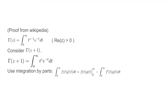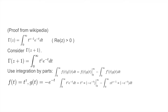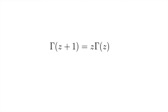If we plug in f equal to t to the z and g equal to negative e to the negative t, we see that the integral of t to the z times e to the negative t dt equals t to the z times negative e to the negative t evaluated at 0 to infinity, minus the integral of negative z times t to the z minus 1 times e to the negative t dt. But t to the z times negative e to the negative t is 0 at both bounds, so we can ignore that term. Rearranging gives z times the integral of t to the z minus 1 times e to the negative t dt, which is just gamma of z. Therefore, gamma of z plus 1 equals z times gamma of z.